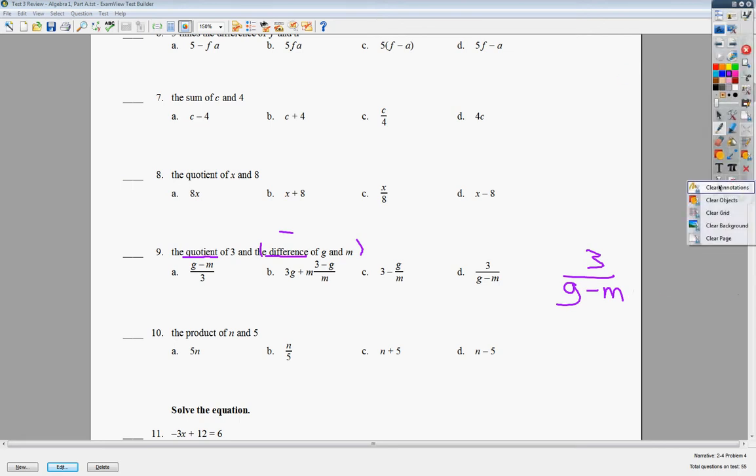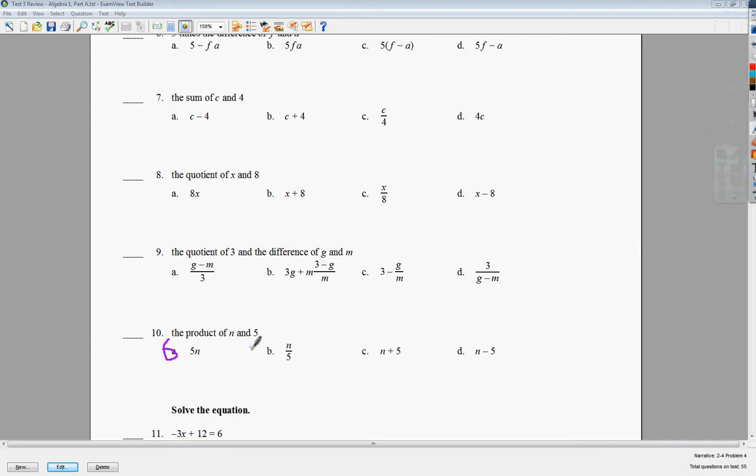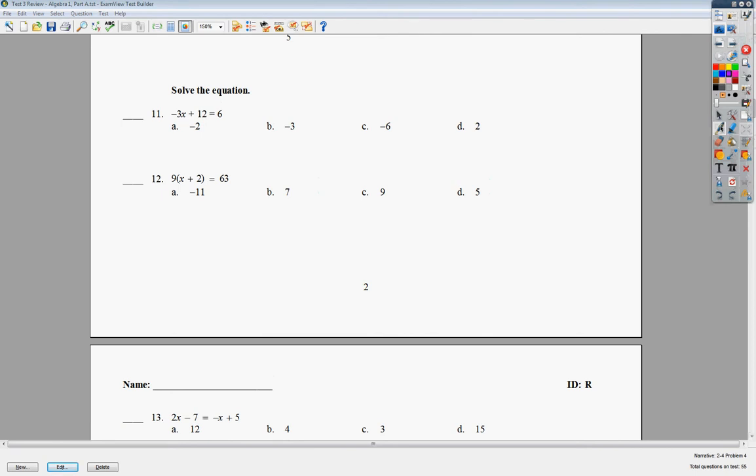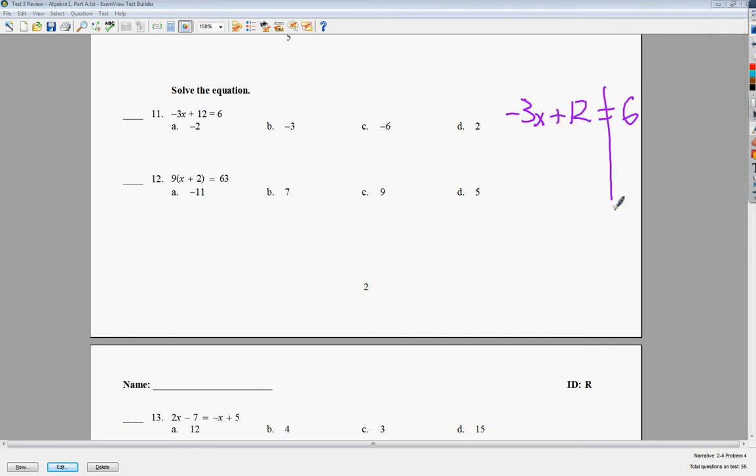Number 10 is a product question. It says the product of N and 5. Well, I know that that's multiply, so I'm going to say it's 5N, because if they're touching, they're multiplying that whole thing. The next one, they want me to solve this equation, so I'm going to write it off to the side. Use scrap paper. I know that seems like a revolutionary idea, but you have scrap paper access during the test, or you could just write on the test, whatever you've got to do.